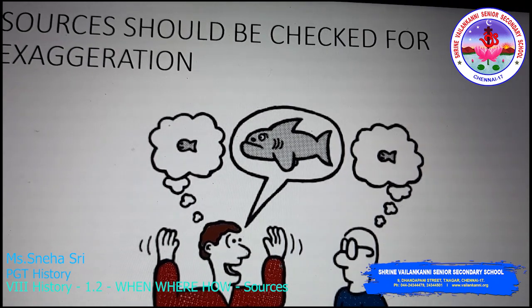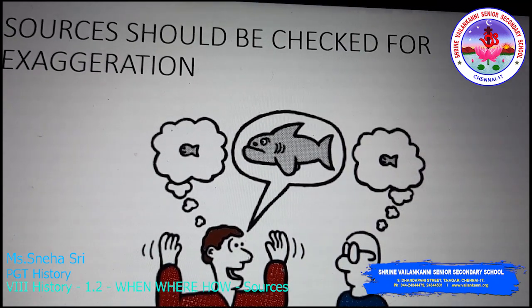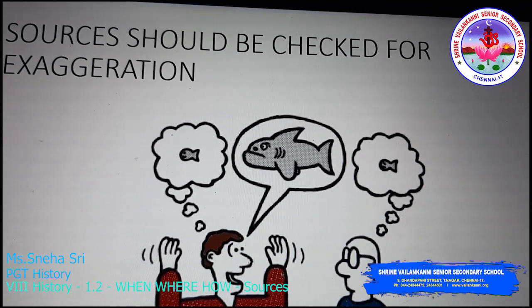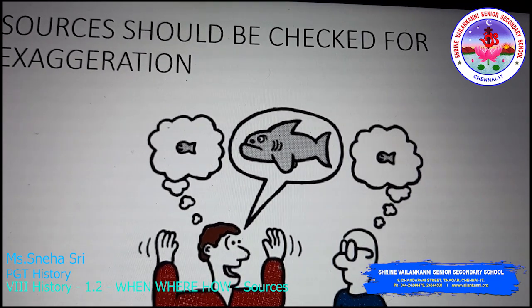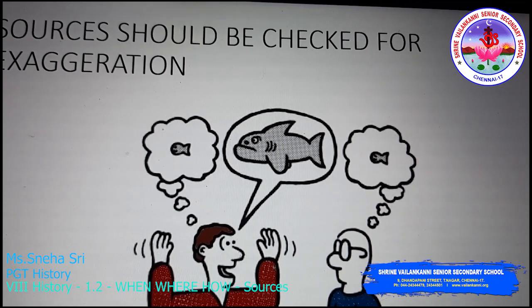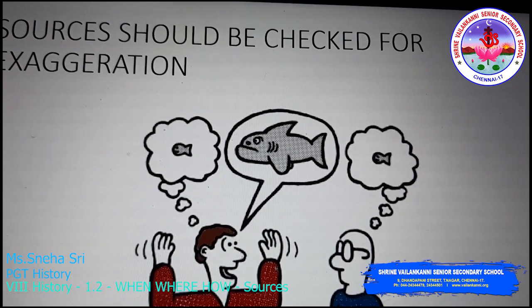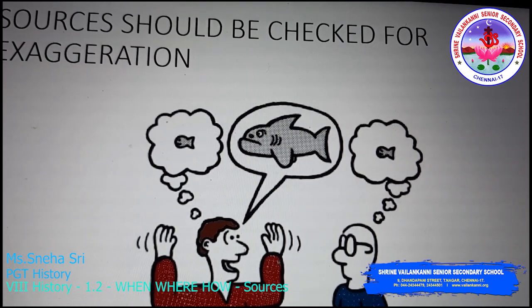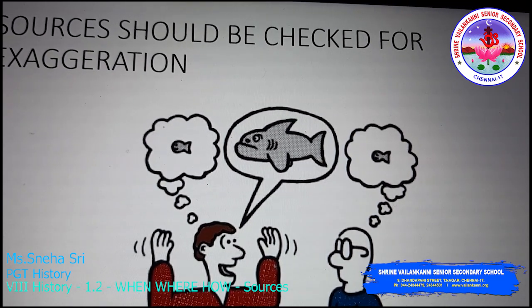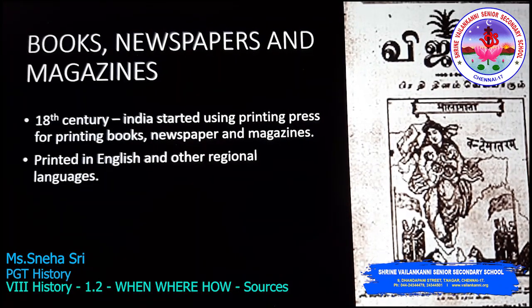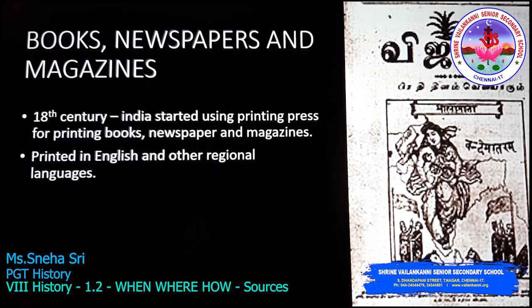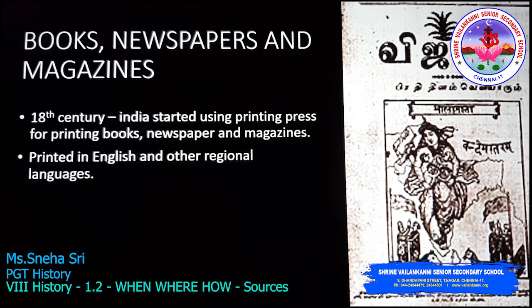To get information regarding something, we have lots and lots of sources to study modern history. The maximum number of sources should be analyzed and then we have to come to conclusions. When the sources of modern history are being analyzed, they should be analyzed in an unbiased way.